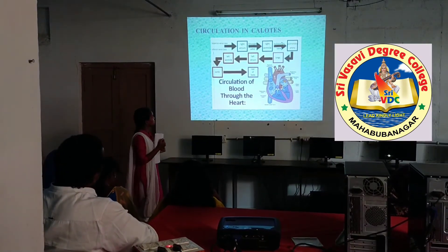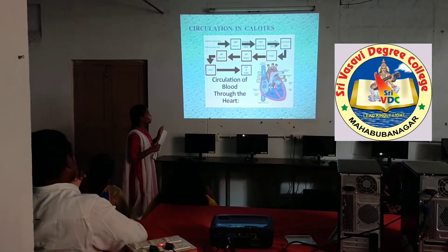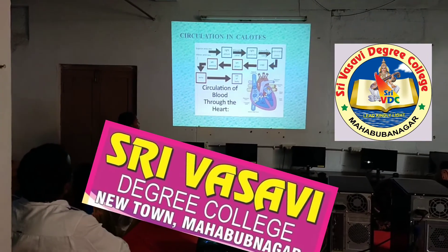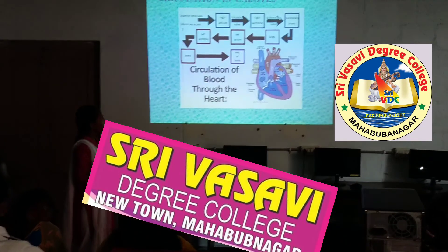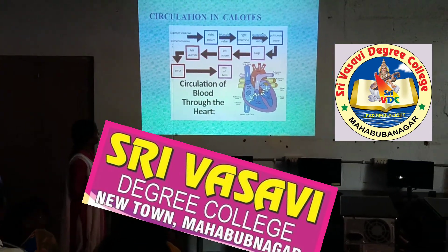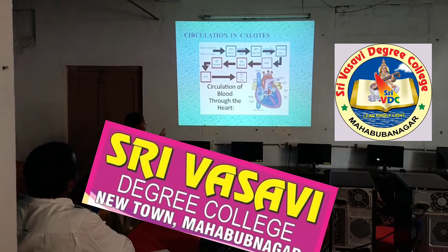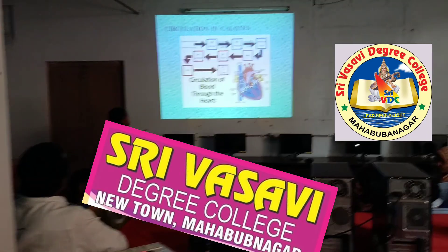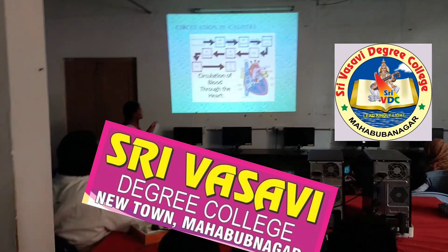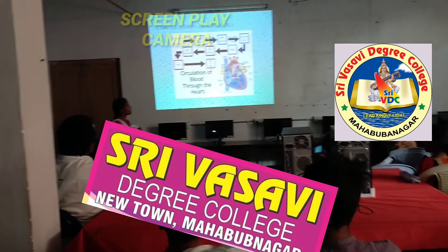Circulation in frogs: from the superior vena cava to the right auricle, by tricuspid valve to the right ventricle, by pulmonary artery to the lungs, from the lungs to the left auricle, then to the left ventricle and aorta throughout the body — completing the circulation.